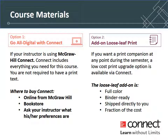There are four options available to you when selecting your course materials. Option one is Go All Digital with Connect. If your instructor is using McGraw-Hill Connect, Connect includes everything you need for this course. You are not required to have a print text. You can buy this option online from McGraw-Hill, at your campus bookstore, or ask your instructor what his or her preferences are.